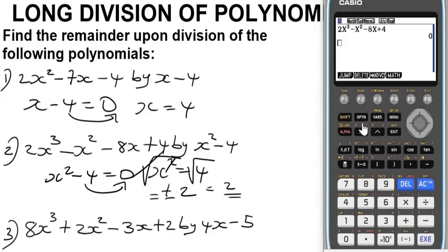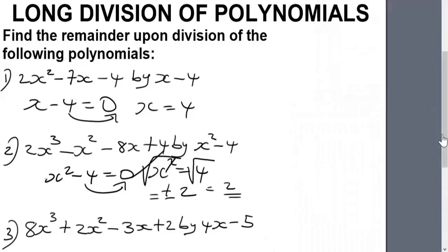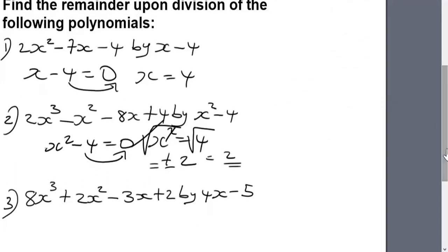Let's solve question three. The divisor 4x minus 5 divides this polynomial, the dividend. As usual, this 4x minus 5, we equate it to zero. Then this minus 5 crosses the equality sign, so I'm going to have it to be 5. Now to make x the subject of the formula, you divide both sides by 4. The x will now be 5 over 4. So we will store this value 5 over 4 on this calculator.